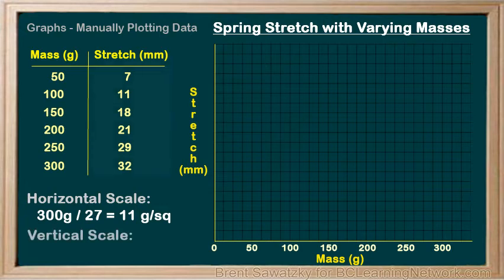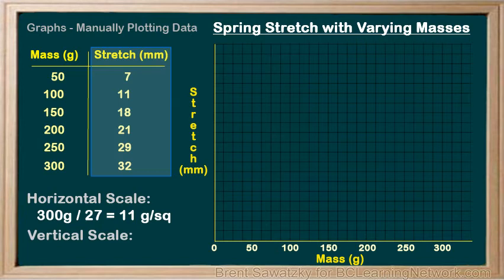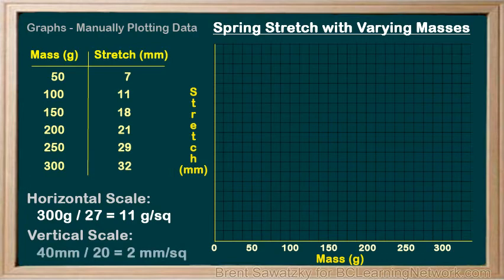On the y-axis, we have numbers going up to 32 millimeters, so our graph should finish at 35 or 40 millimeters or some round number like that. We count our blocks and find that we have 20 blocks going up, so we use 40 millimeters: 40 divided by 20 blocks equals 2 millimeters per block. If we mark every 5 blocks as 10 millimeters, we make a nice grid that uses a good portion of the available space.